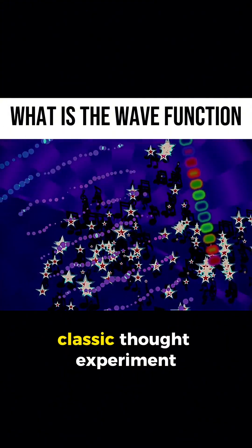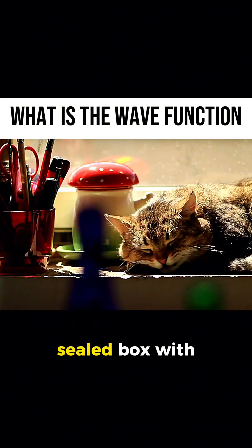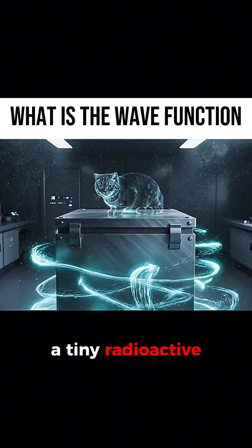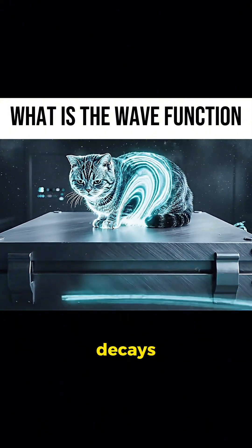Schrödinger's cat is the classic thought experiment to illustrate this. Imagine a cat locked in a sealed box with a tiny radioactive source, a detector, and a poison that will be released if the atom decays.